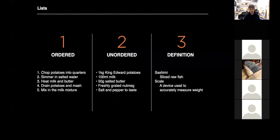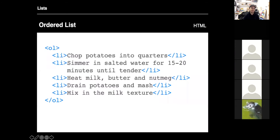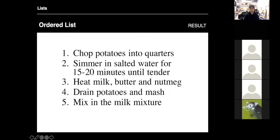This was all initially built for scientists and researchers to share scientific and research-based information, so the definition and list aspect comes from that. For ordered lists, the tag is OL — it's OL for ordered lists. Inside the open and close tags for ordered lists, we have LI, which is a list point. You just have the open and close tags for each one with text in between. When you load it in the browser, it shows a numbered list — in this case, instructions to make a meal, one through five.